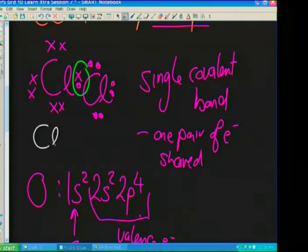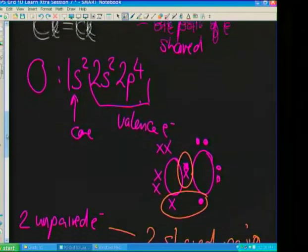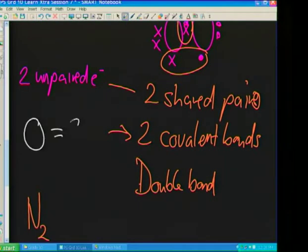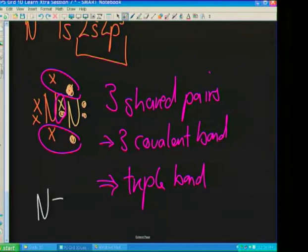There is another notation used to model bonding called Cooper notation. Instead of drawing all the electrons, we just show the bonds as lines. For chlorine: one line representing the single bond. For oxygen: two lines representing the double bond. For nitrogen: three lines representing the triple bond. Every line represents a shared pair of electrons.